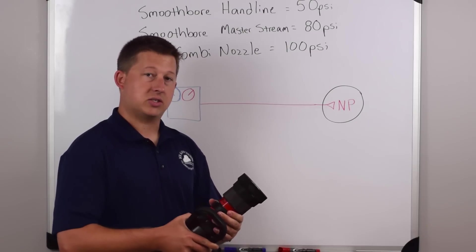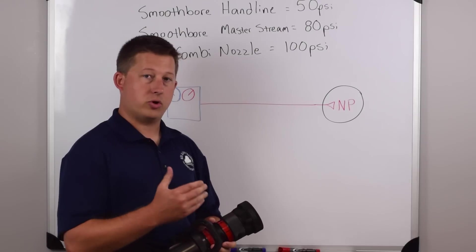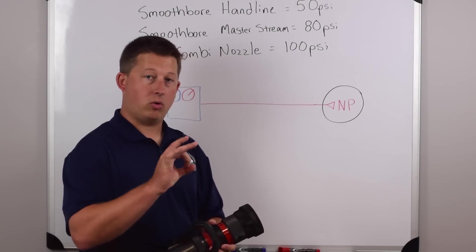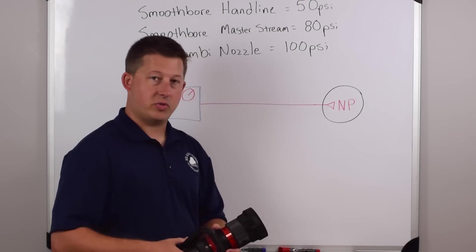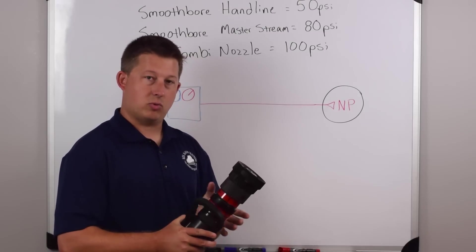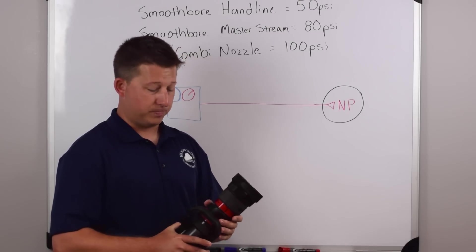When we turn this dial on a selectable gallonage, all that we're doing is basically making the hole bigger and smaller, just like we did with the smoothbore. But now we have this available in a turn dial.